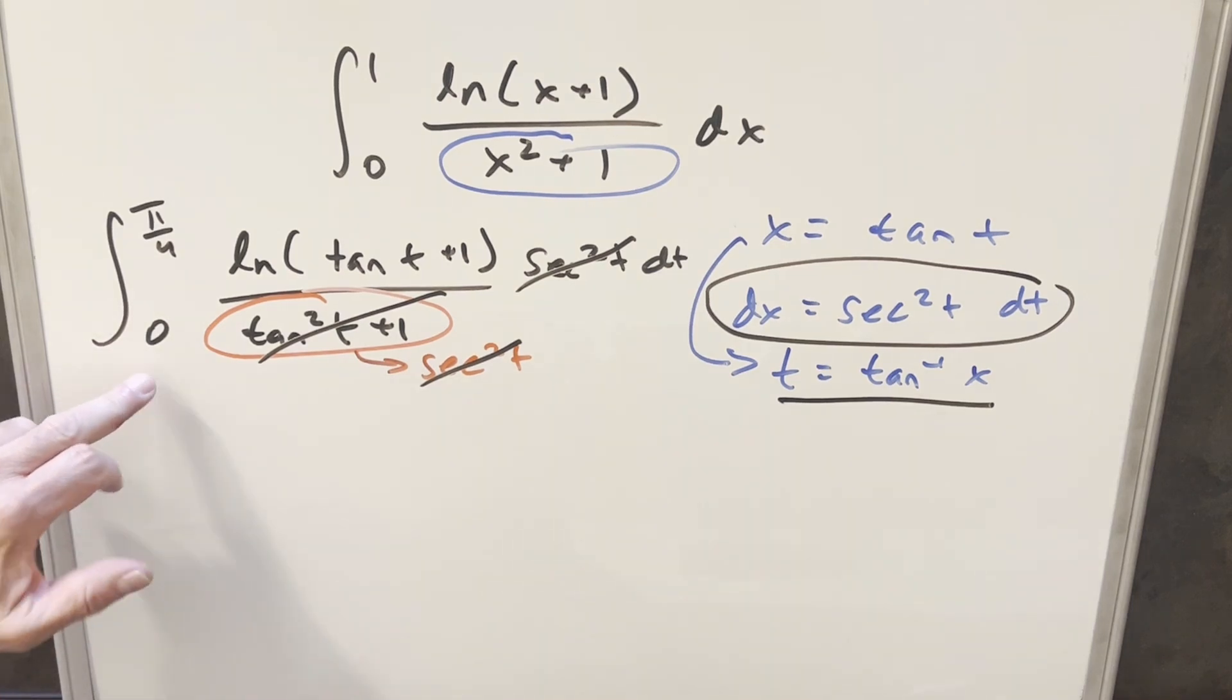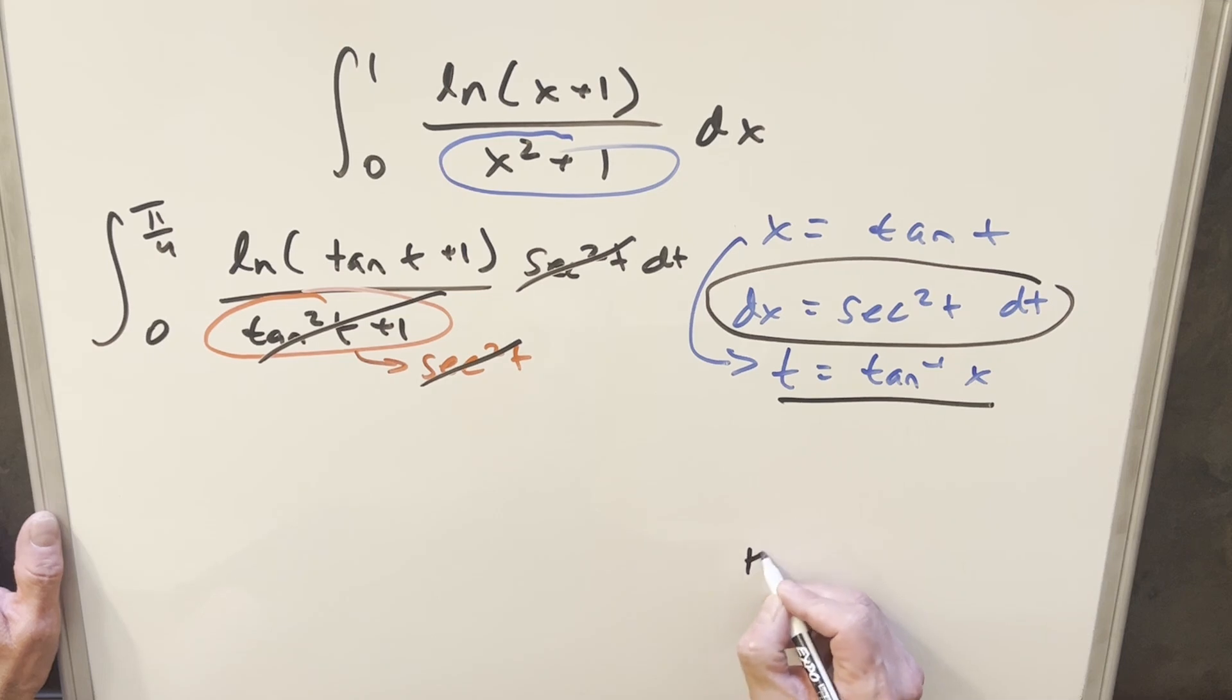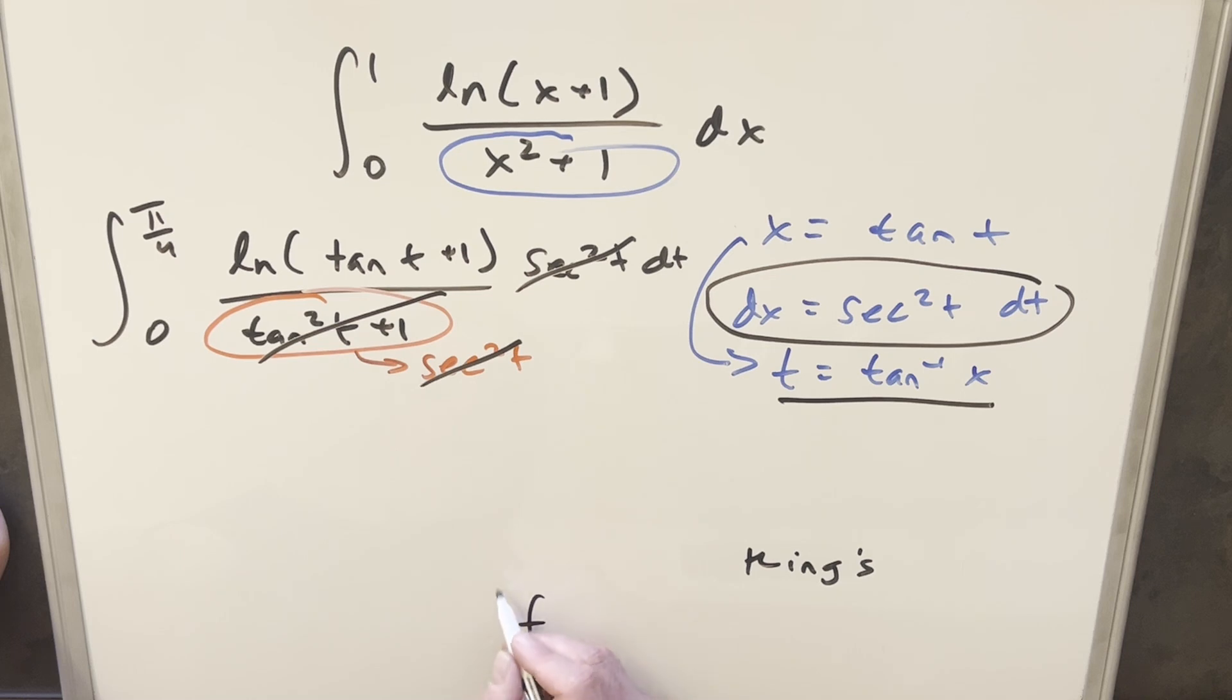Now for this, the bounds are pretty nice with having zero for the lower bound. What I want to do is use King's principle on it. For that, we have this formula that if we have an integral from a to b of f of x, we can rewrite this as f of b plus a minus x.